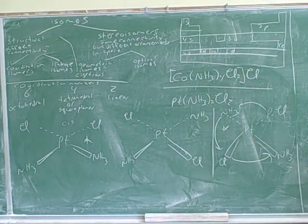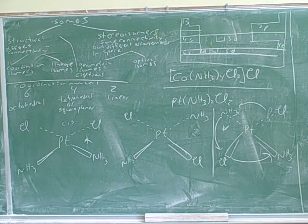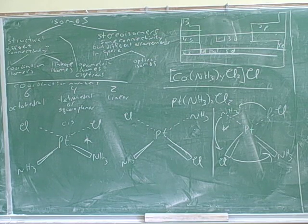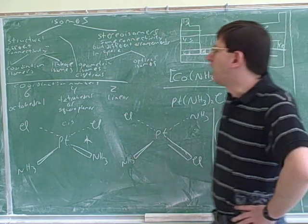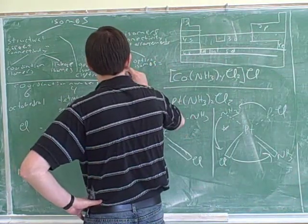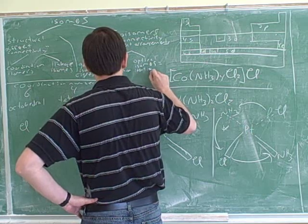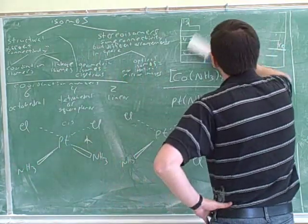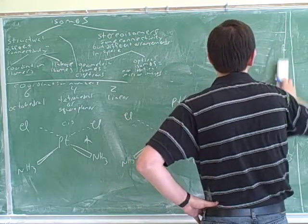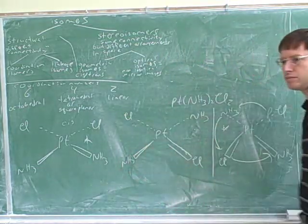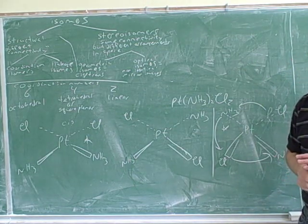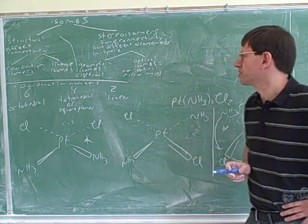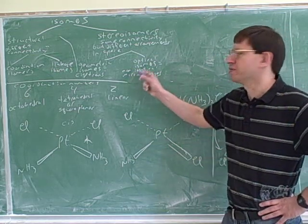Alright, so optical isomers are non-identical mirror images. The word optical here is not very useful. It's a little bit of a historical curiosity. They're called optical isomers. Maybe it would be better to call them mirror isomers.